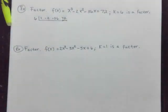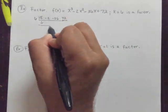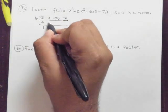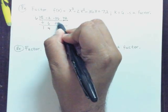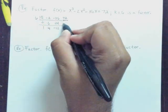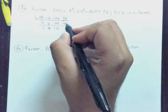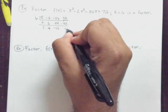Let's go ahead and do the synthetic. Bring down the 1, 6 by 1 is 6, negative 2 plus 6 is 4, 6 by 4 is 24, negative 36 plus 24 is negative 12, and 6 by negative 12 is negative 72, with a remainder of zero.